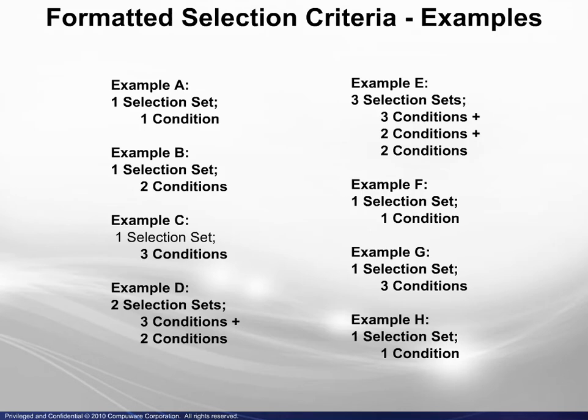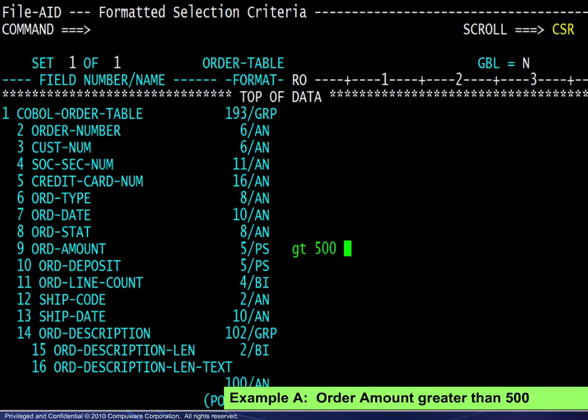We will now look at a number of formatted selection criteria examples. For most cases, only the criteria specification and not the results are shown. For example A, simply post the greater than operator on the order amount field line and specify the value 500.